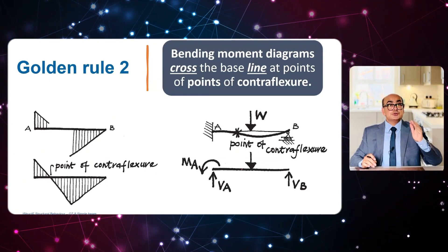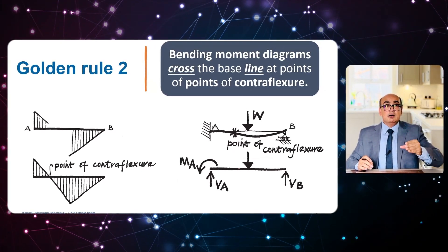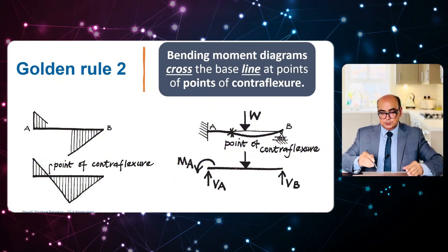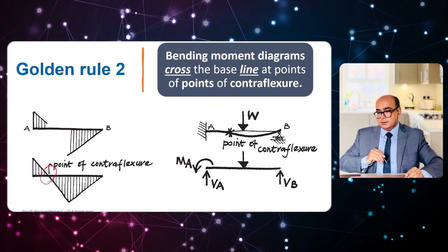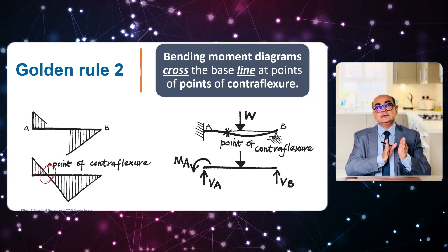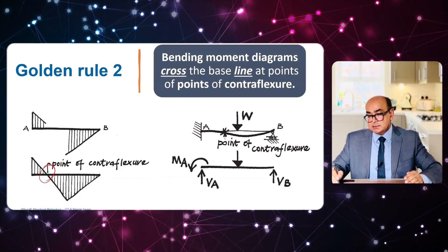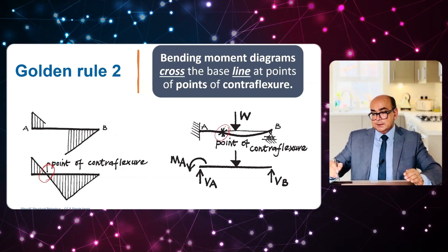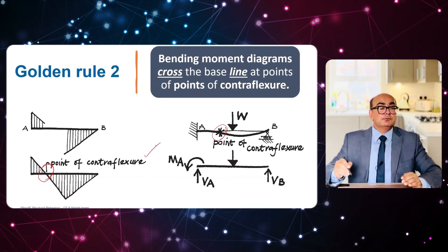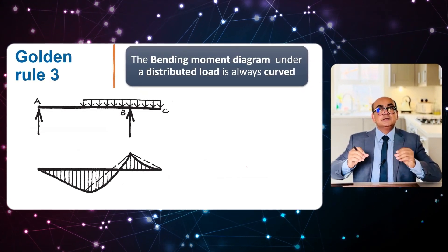The second rule is that bending moment diagrams cross the baseline at points of contraflexion. Points of contraflexion are the points where bending moment is zero. Where the deflected shape is changing direction, that is a point of contraflexion. In this beam you can see we have a point of contraflexion here.